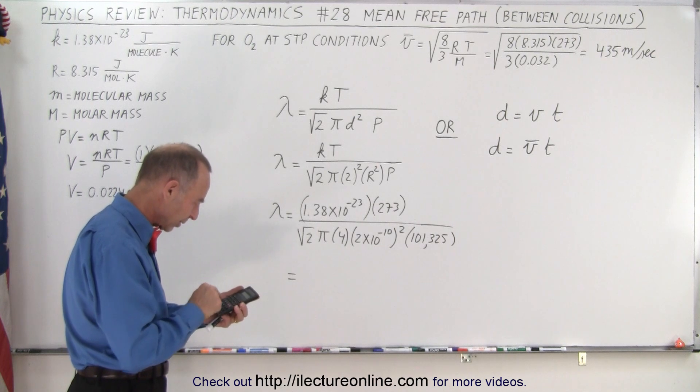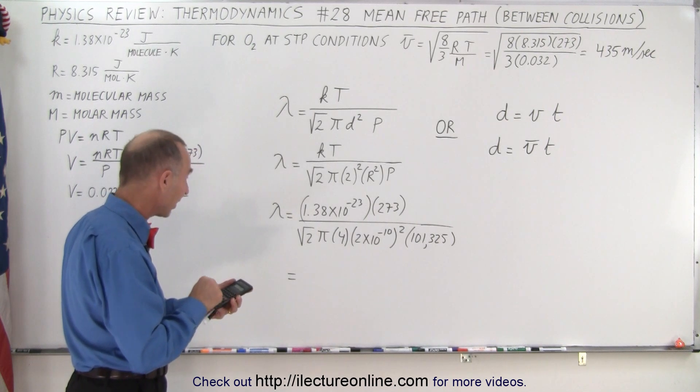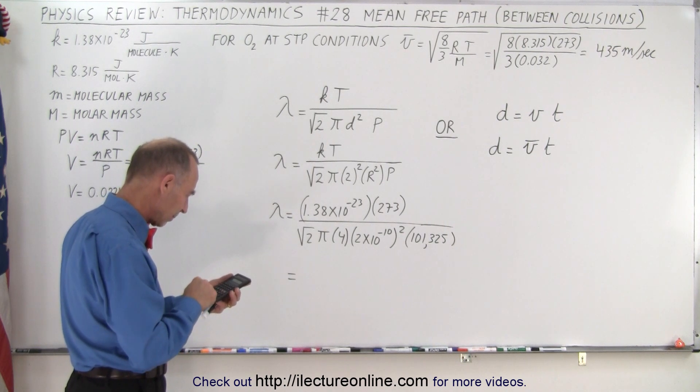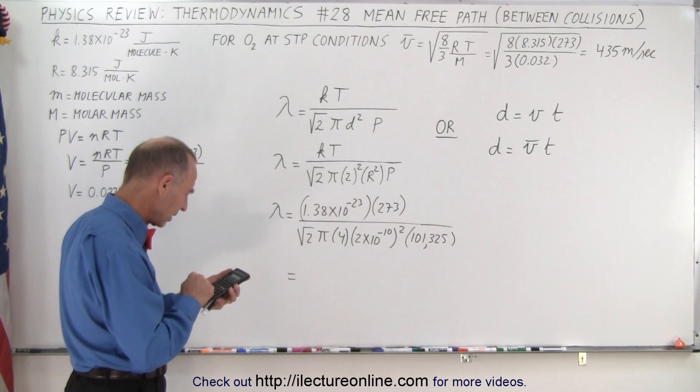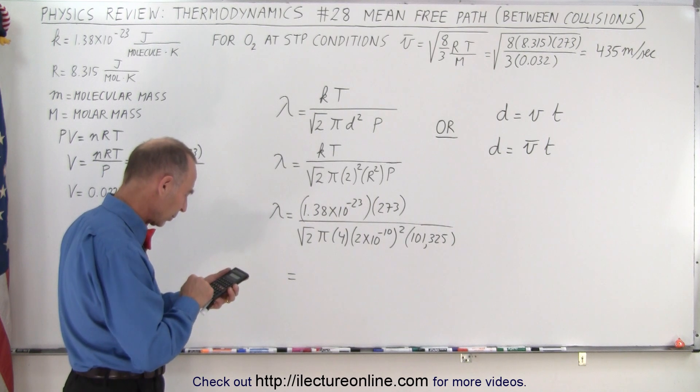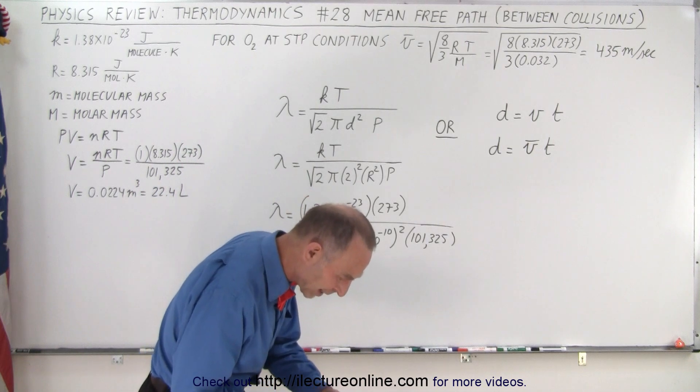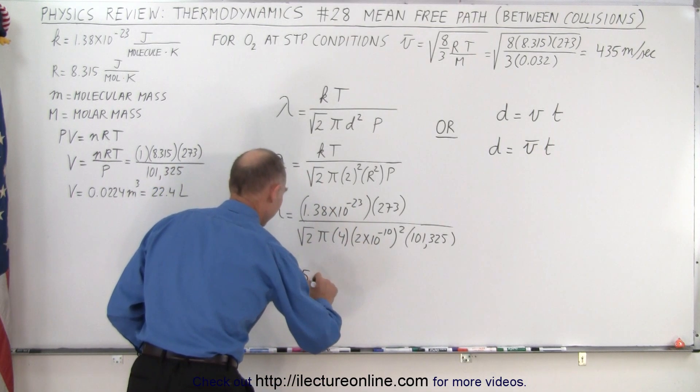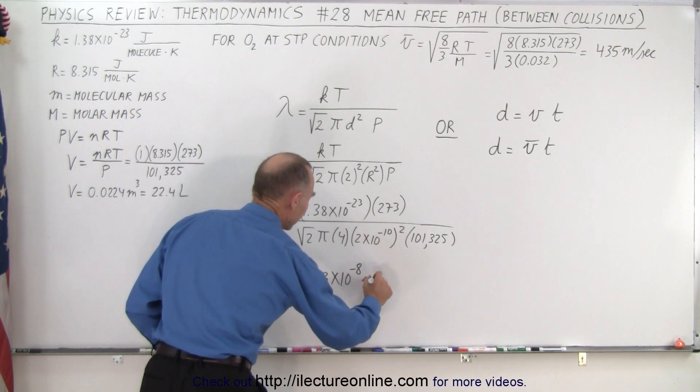1.38 e to the minus 23 times 273 divided by, take the square root of the 2, divided by pi, divided by 4, divided by 2 e to the minus 10 squared, and divide by 101,325, and it's 5.23 times 10 to the minus 8. So lambda equals 5.23 times 10 to the minus 8 meters.